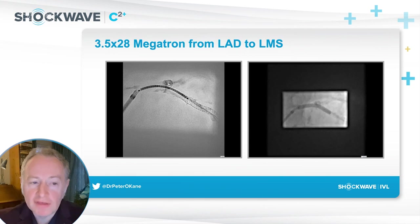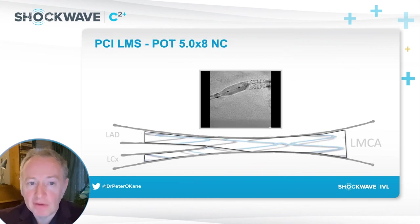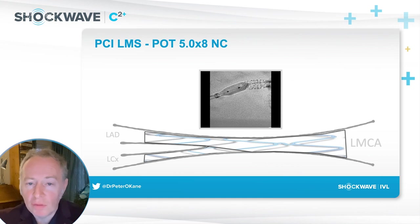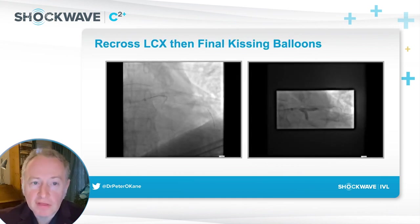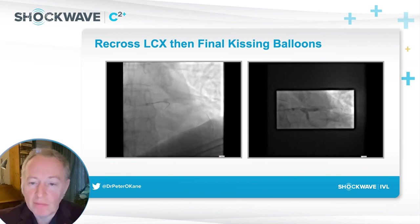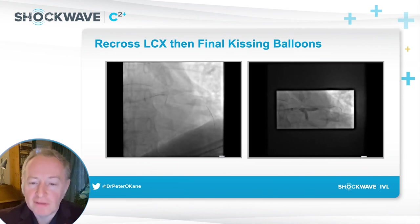Once we've performed this, we concentrate on the LAD to left main. We use a Synergy Megatron stent — 3.5 by 28 — using fluoroscopy to ensure both overlap and full left main coverage. We perform a POT with a 5.0 balloon to ensure optimal stent expansion. We then go back with the dual-lumen catheter to rewire the circumflex, again making sure we're not abluminal, and perform a final kissing balloon inflation with bigger balloons — 3.5 by 15 — in each limb.